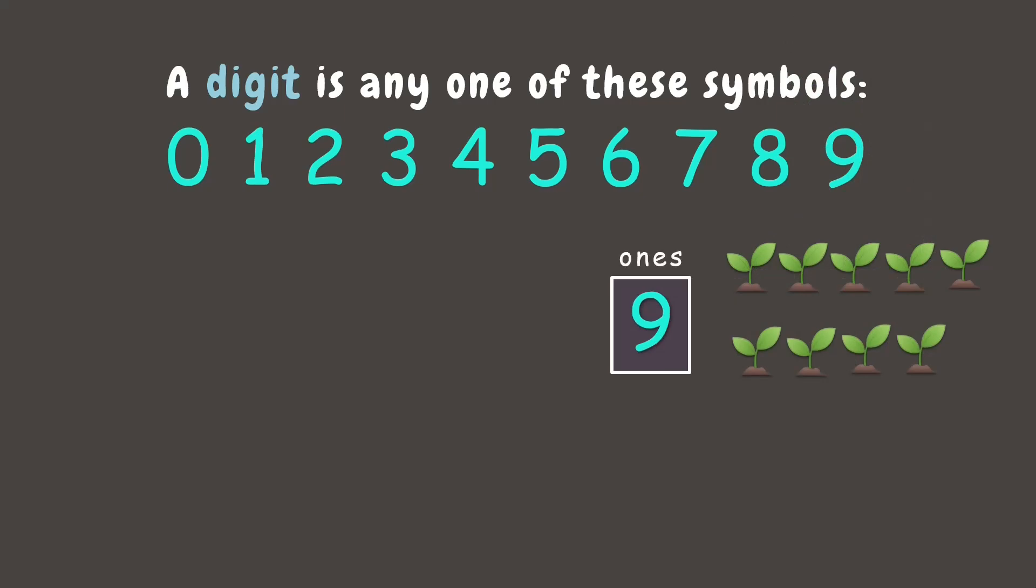Now what happens if we add one more? Since there's no digit after 9, we add another place to the left. That gives us the number 10, which now has two digits. The new place is called the tens place.